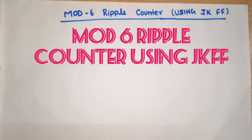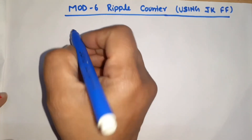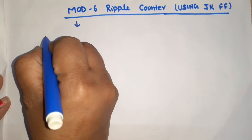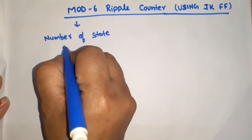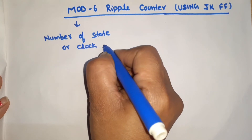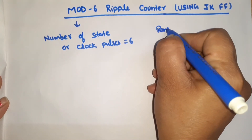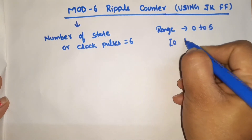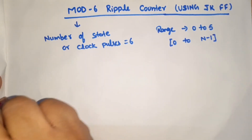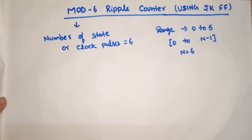In this video, we will discuss how to design a Mod 6 ripple counter using JK flip-flops. Mod 6 means modulo 6 — the number of states or clock pulses that can be counted by this counter is equal to 6. Its range will be 0 to 5, calculated as 0 to N minus 1, where N equals 6.